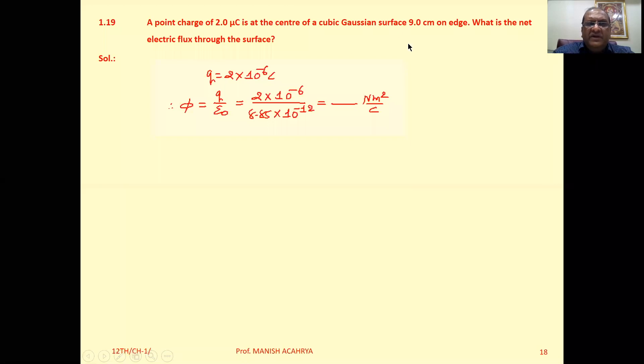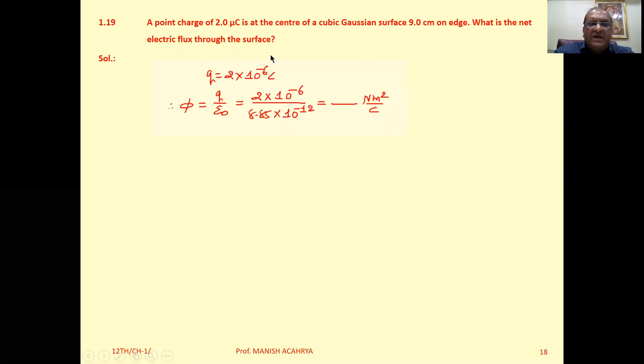Example 1.19: A point charge of 2 microcoulomb is at the center of a cubic Gaussian surface, 9 cm on each edge. What is the net electric flux through the surface? Very simple example.